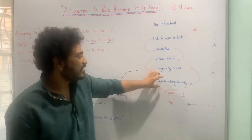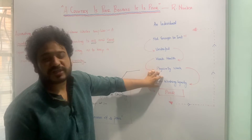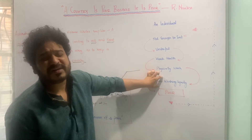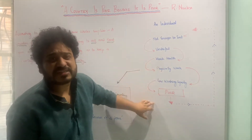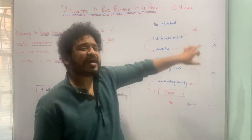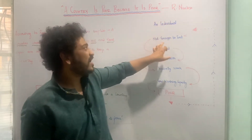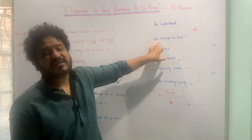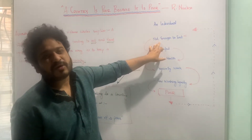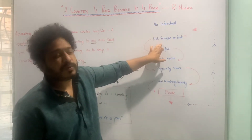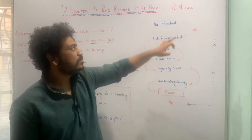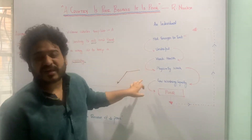And this continues as a spiral. He or she cannot work because they have low productivity, and as a result they are poor. Furthermore, they are underfed or do not have enough to eat, and this circle continues.